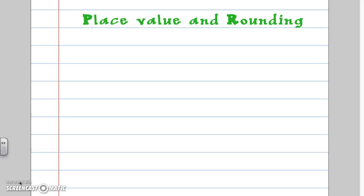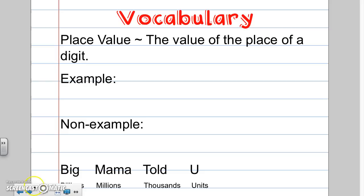Let's start off with some vocabulary. Place value is the value of a place of a digit. When I look at the number 295 and I look at the 9 that's in the tens place, the 9 is not just worth 9, it's actually worth 90 because it's in the tens place. Just like the 2 in the hundreds place, it's not worth 2, it's worth 200.